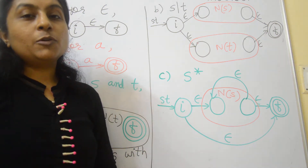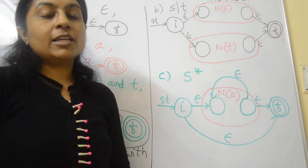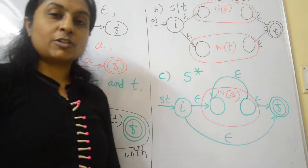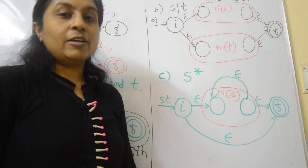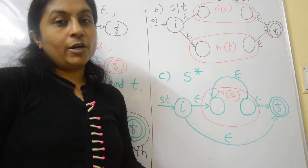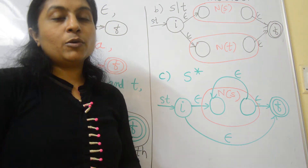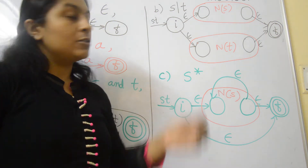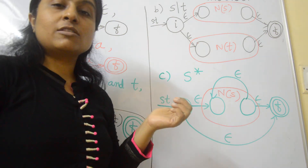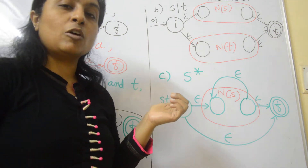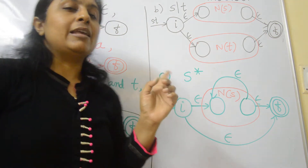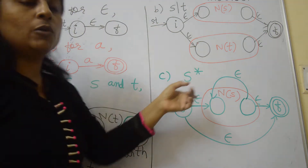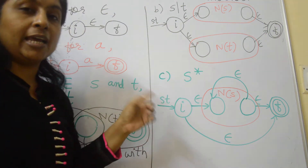In the first method, to convert a regular expression to NFA, we have Thomson's construction method. To convert NFA to DFA, we have the subset construction method. Let us see a few constructs in Thomson's construction method that is used to convert a given regular expression to an equivalent NFA.